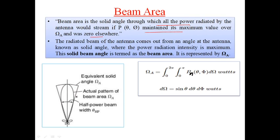See this diagram carefully — this is called a radiation pattern, which we already know from previous parameters. It shows the maxima and minima radiations of an antenna. This is the main beam and the rest are minor beams. In this main beam, all the power radiated by the antenna would stream — that is, P(θ, φ) is maintained maximum — and this is what we majorly consider for calculation of beam area.